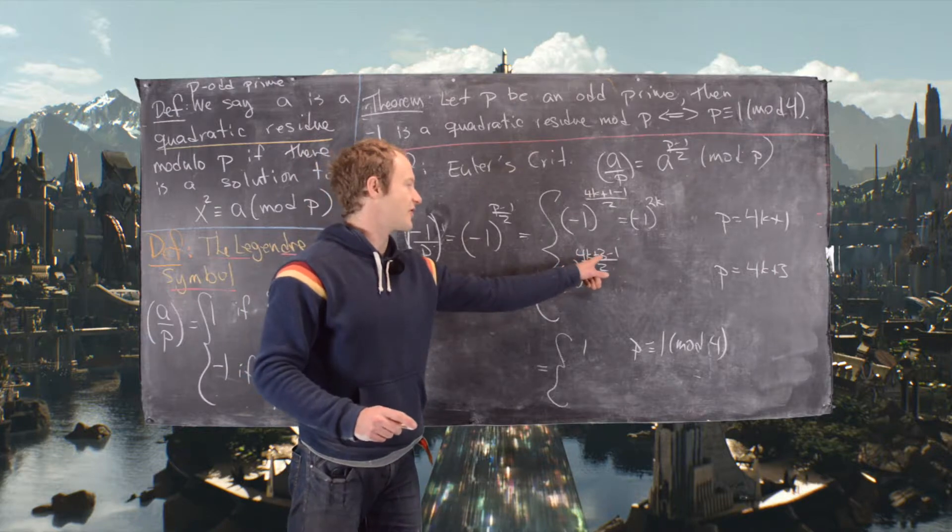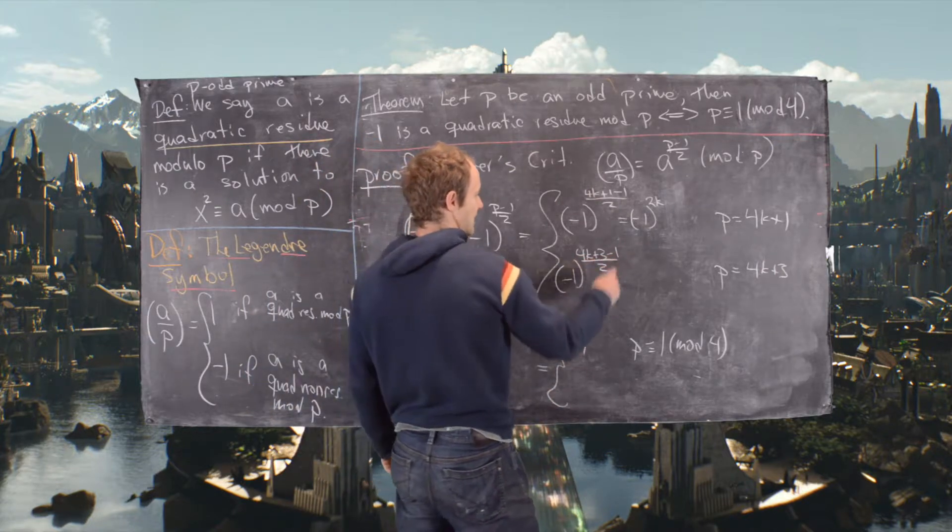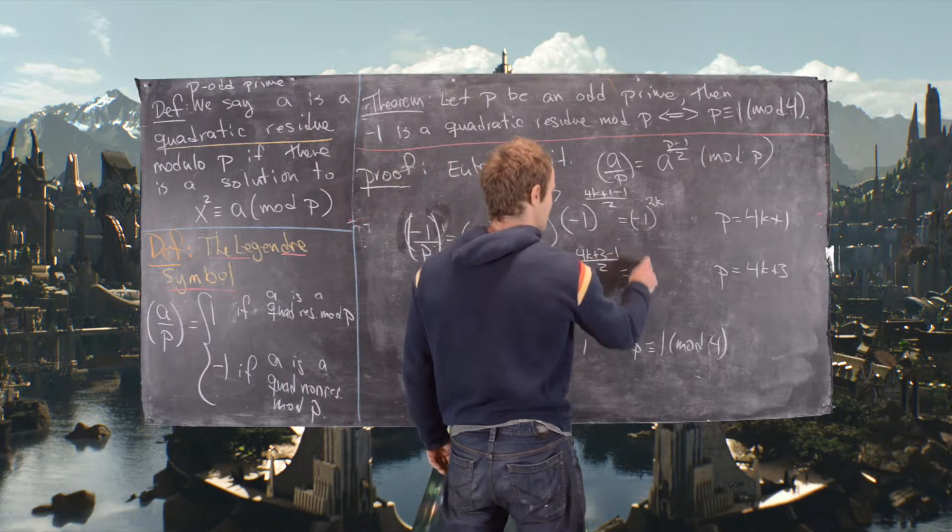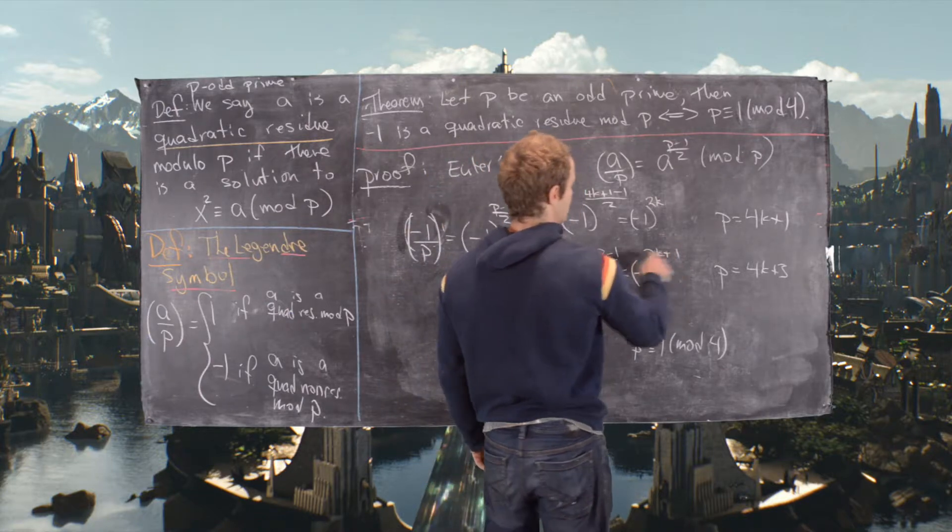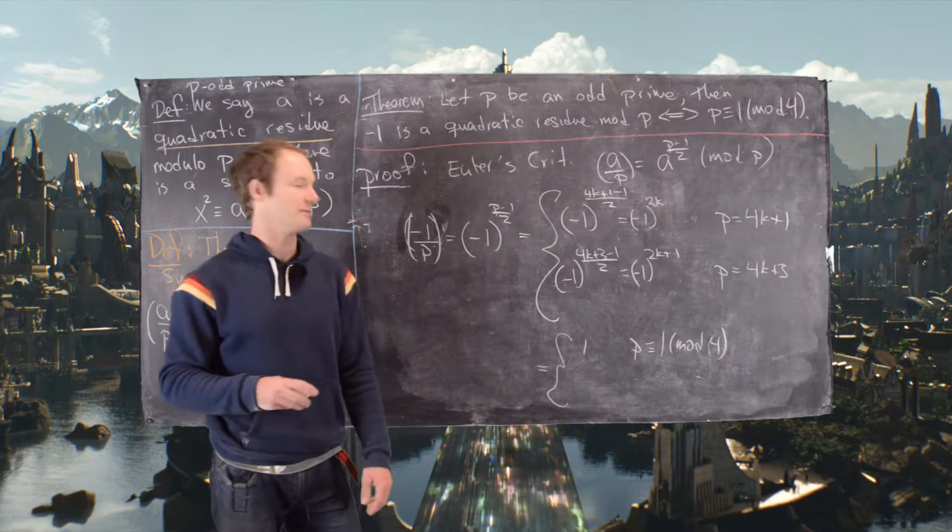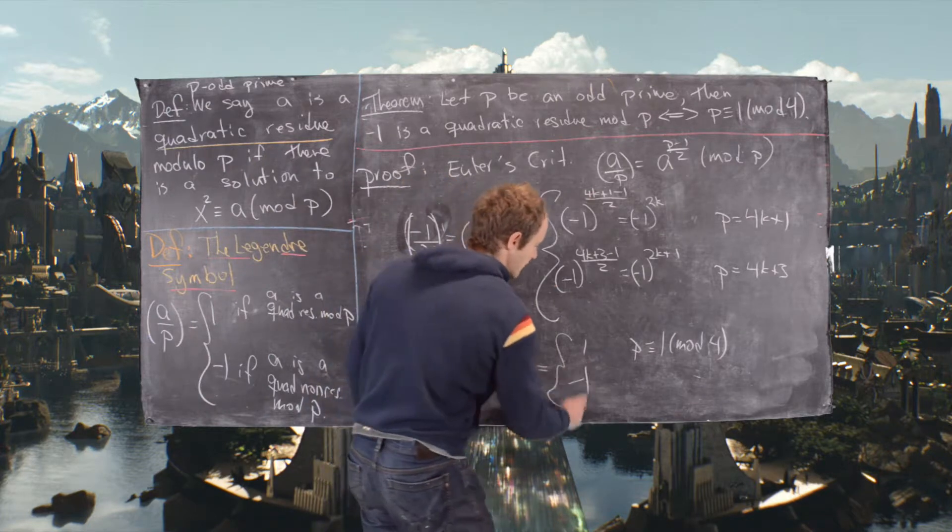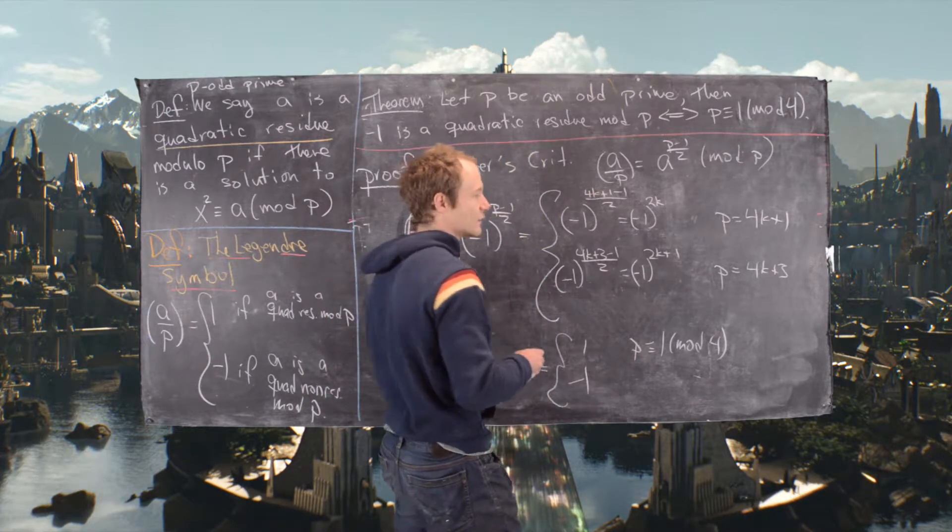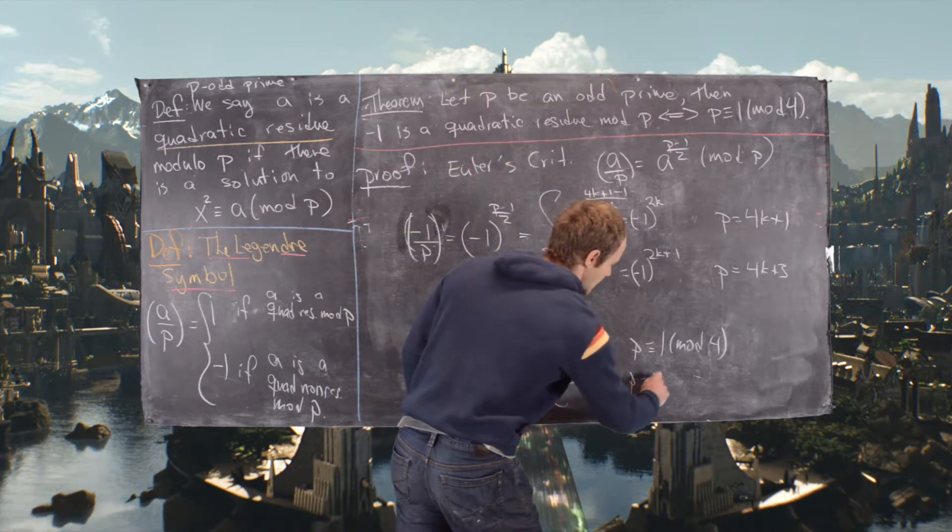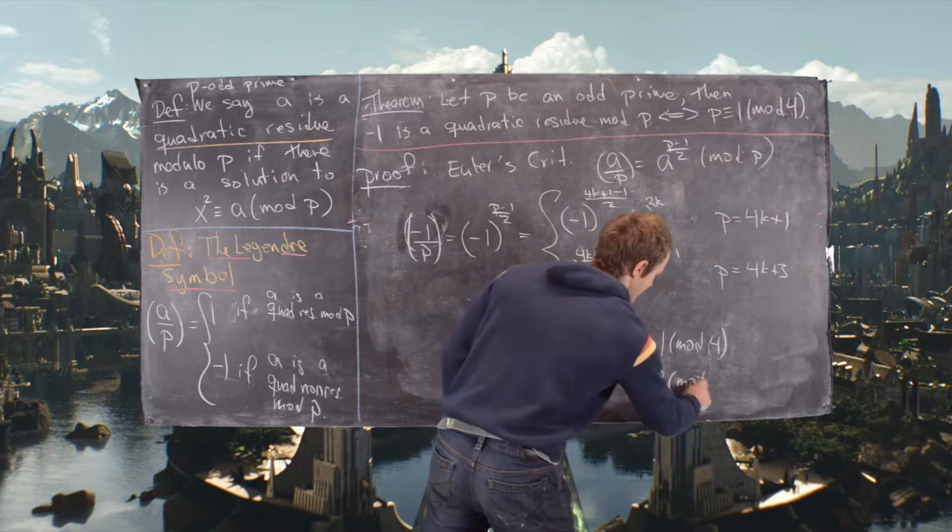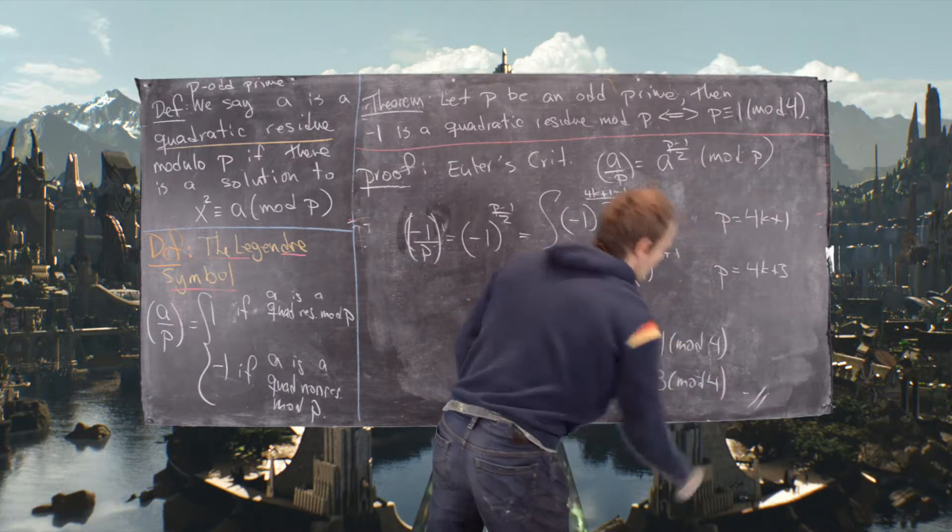And then over here, notice the 3 cancels with the negative 1 to leave us 2. So this is negative 1 to the 2k plus 1. But now that's negative 1 to an odd number, so that's going to be negative 1. And I'll replace p equals 4k plus 3 with p is congruent to 3 mod 4.